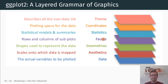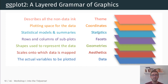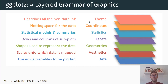Then we have facets, which describe the rows and columns of potential subplots — so we could subdivide our plot into different areas. We also have additional layers like statistics, which are statistical models and summaries computed based on the data coordinates. And then lastly, themes, which describe all the non-data visualization aspects like styles that determine the overall look of the plot.